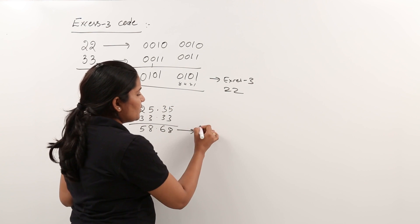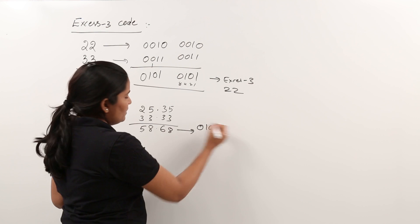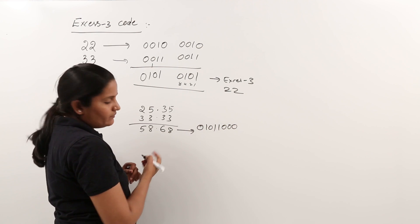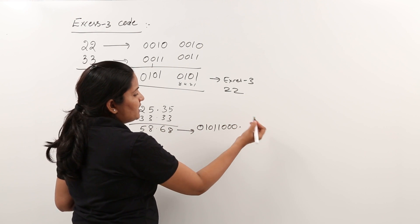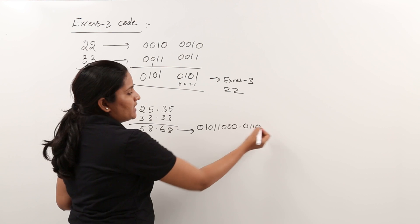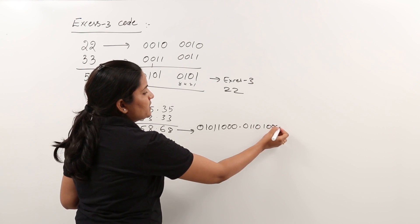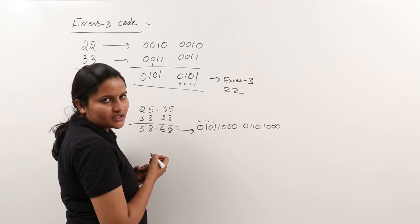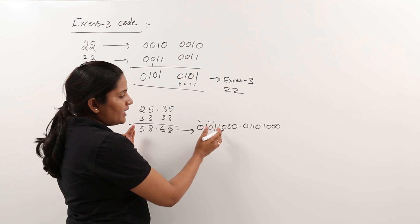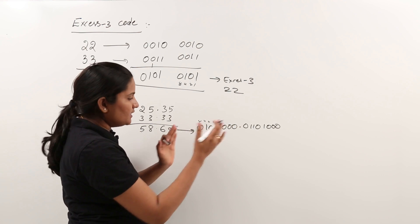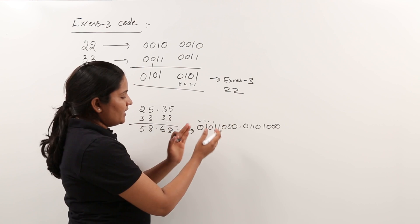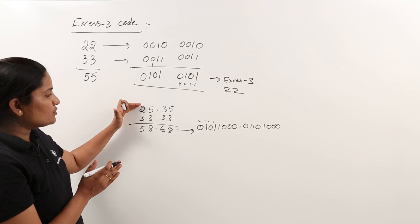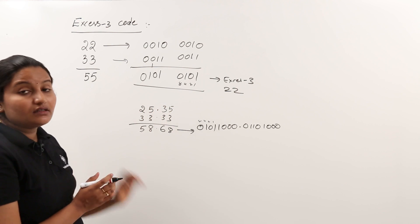So 5, 8, 6, 8 will be the XS3 code for 25.35. For this you are decoding. 0101 is nothing but 5. 8 means 1000. 6 means 0110. 8 means again 1000. So if you have any doubt, you just decode 8, 4, 2, 1 for each digit. So this is 5868 which is XS3 code for 25.35.